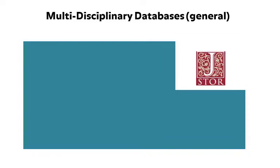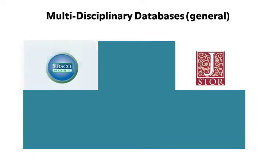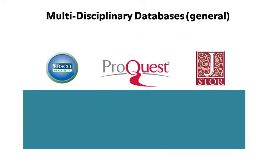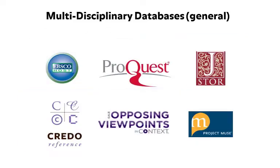Maybe you've heard of JSTOR, EBSCO's Academic Search Complete, ProQuest Research Library, or Opposing Viewpoints. These are examples of general, multidisciplinary library databases.